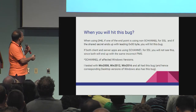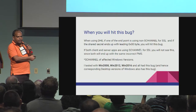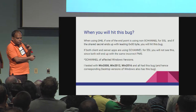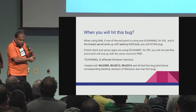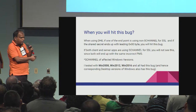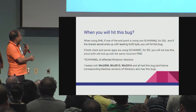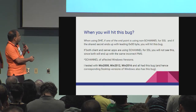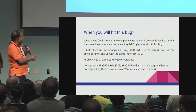You will hit the bug if one of your endpoints is a non-S-Channel TLS implementation and the other is a Windows S-Channel implementation, if you are using DHE, and if the shared secret ends up with a leading 00 byte. When I tested, I found the bug is present in all versions: 2008, 2012, and 2016.